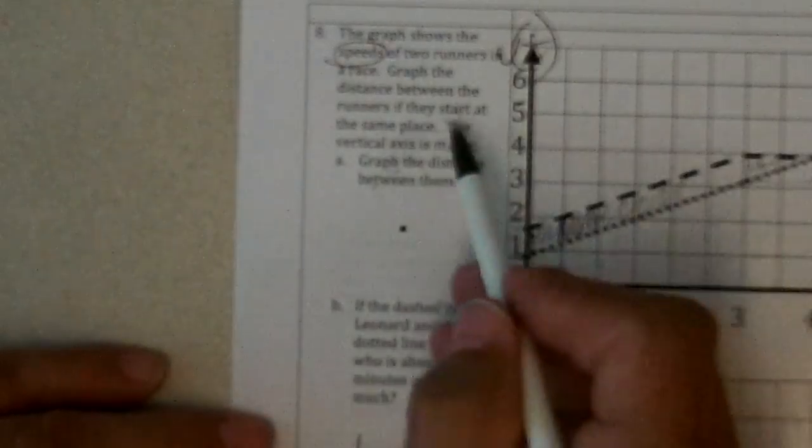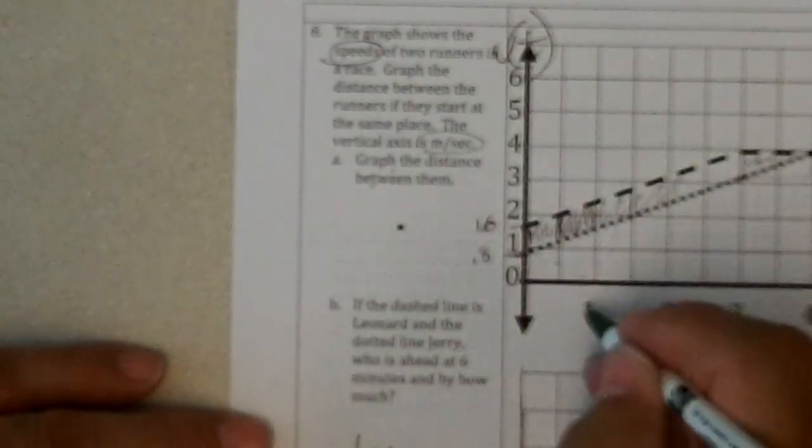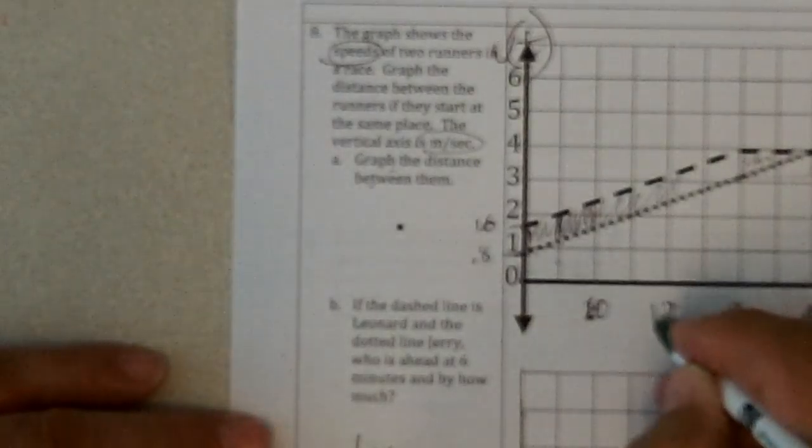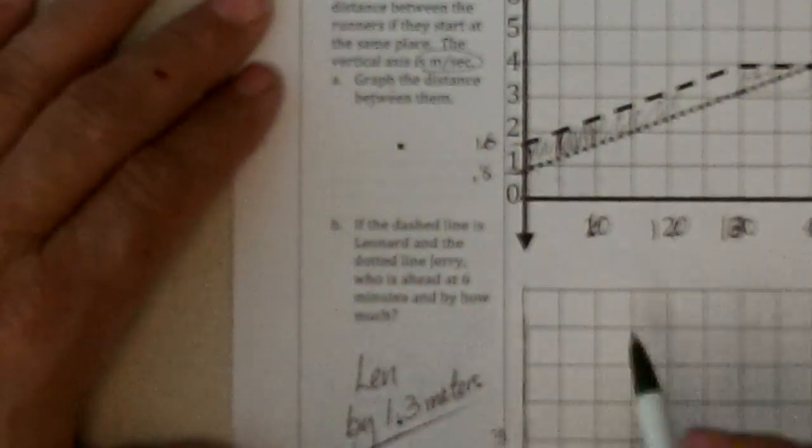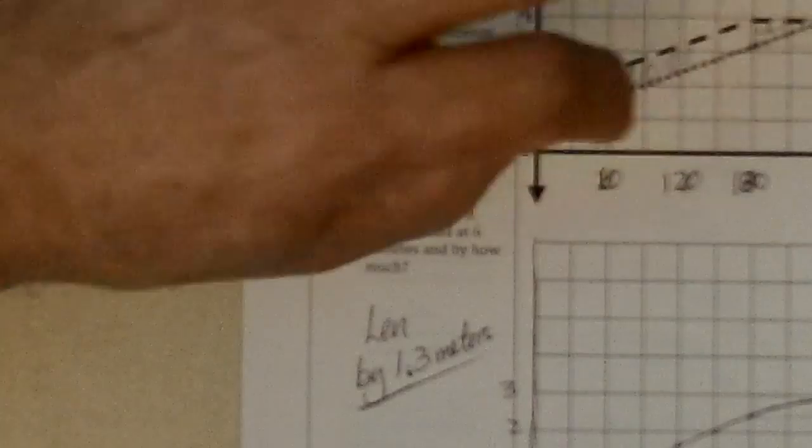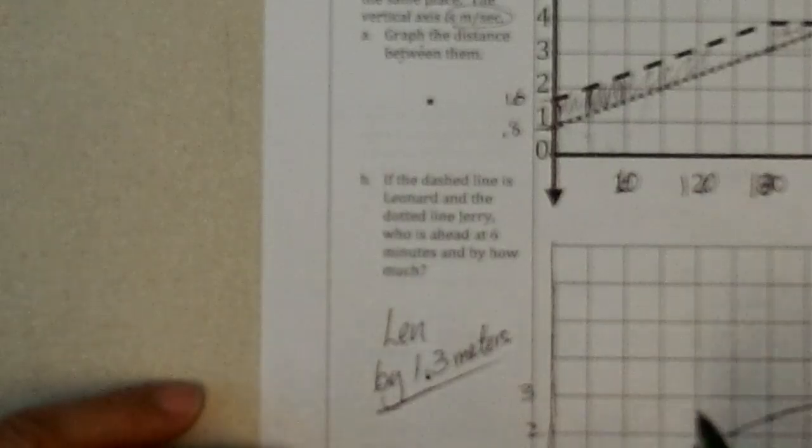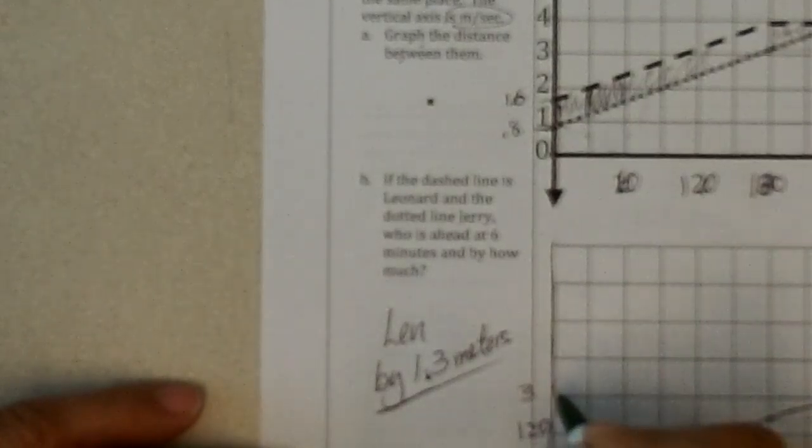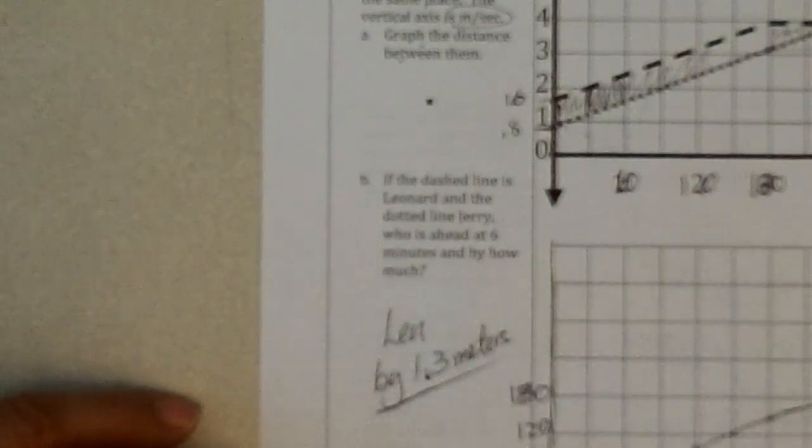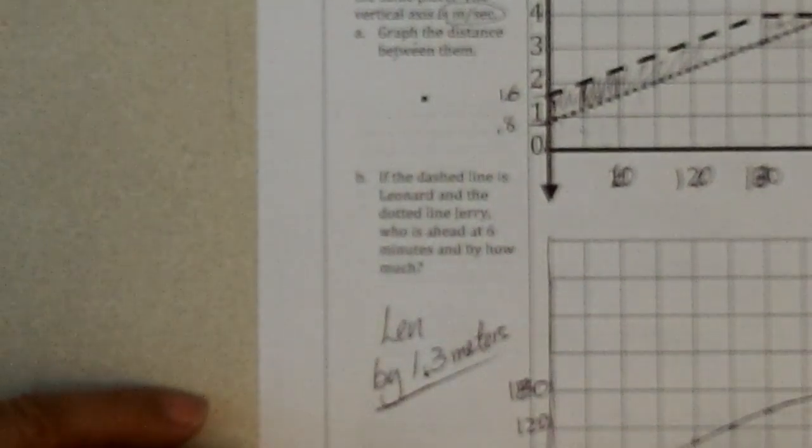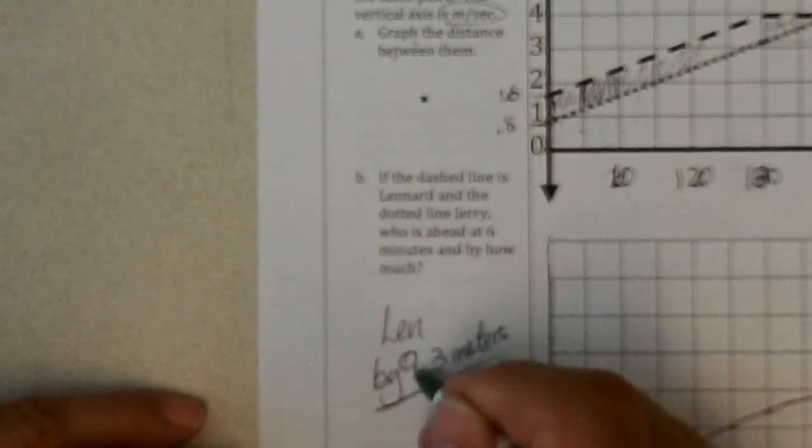Oh, I forgot to do something here. These are minutes and the speed is in meters per second. So this is 60, 120 seconds, 180 seconds. And so that multiplies all these areas by 60 times as much. And so this would be 60 meters, 120 meters, 180 meters. And so that's actually 60, maybe 80 meters ahead Leonard is.